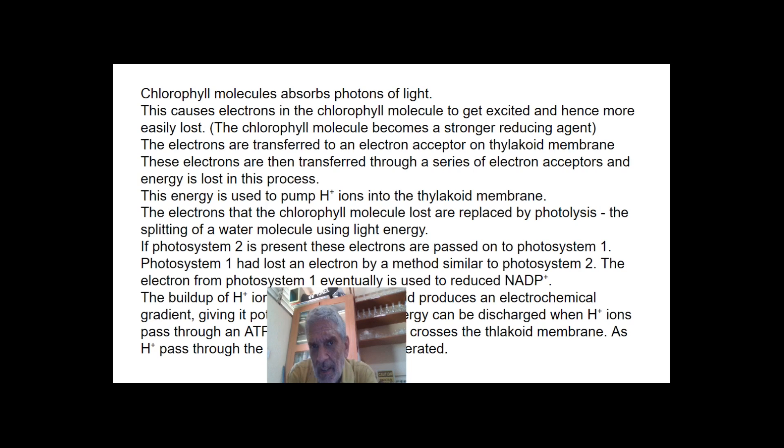The chlorophyll molecule absorbs photons of light. And this causes electrons in the chlorophyll molecule to get excited and hence more easily lost. The electrons are transferred to electron acceptors and energy is used to pump H plus ions. Electrons that the chlorophyll molecule lost are replaced by the splitting of water molecule due to light.